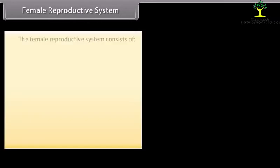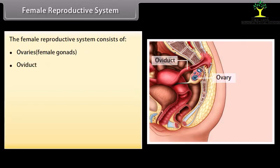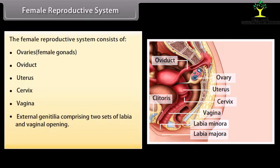The female reproductive system consists of ovaries (female gonads), oviducts, uterus, cervix, vagina, external genitalia comprising two sets of labia and the vaginal opening, and a pair of mammary glands.